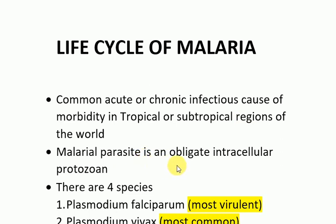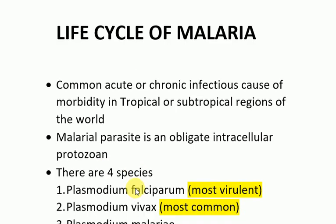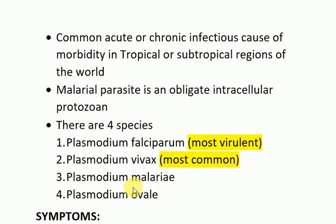The malarial parasite is an obligate intracellular protozoan, and there are four species of malaria. Number one: Plasmodium falciparum, which is the most virulent one. Number two: Plasmodium vivax, which is the most common one. Number three: Plasmodium malariae. Number four: Plasmodium ovale.